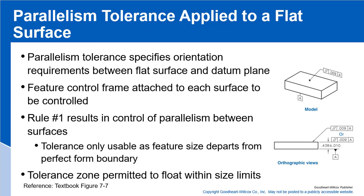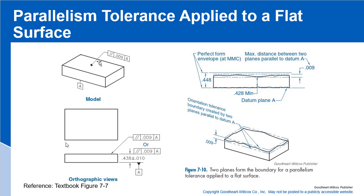Let's explore parallelism tolerances on a surface further. In a model you apply it with a dot and leader, and in orthographic views you can use a leader pointing to the surface or attach the parallelism tolerance directly to the extension line. The tolerance zone consists of two parallel planes — the maximum distance between two parallel planes relative to datum A. Here the perfect form boundary is at 448, which is the MMC for this feature.